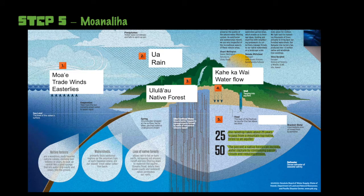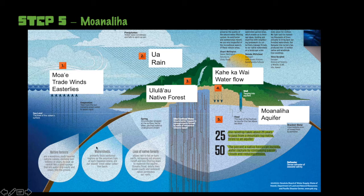Step five is Moanalija, or aquifer. Groundwater eventually reaches our island's natural underground reservoirs formed by lava flows — these are called Moanalija, or aquifers. You can think of them as underground water storage tanks. The water in underground aquifers pools in large lens-shaped bodies, as you can see on the diagram. Our islands don't float on top of the aquifer — the diagram can be a little misleading. Our island is made up of many layers of solid rock, but water can collect in areas where the rock is more porous, or full of holes and pukas. These pockets of water are our aquifers.